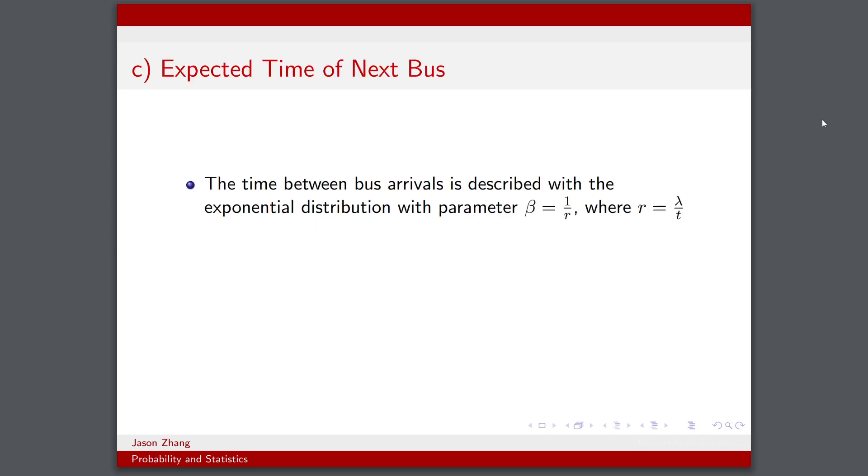So now we want to know the expected time of the next bus, given a certain number of buses arriving in the past. But another interesting property that we should know about Poisson random variables is that the time between arrivals can be described by another random variable that has an exponential distribution, with parameter β = 1/r where r = λ/t.